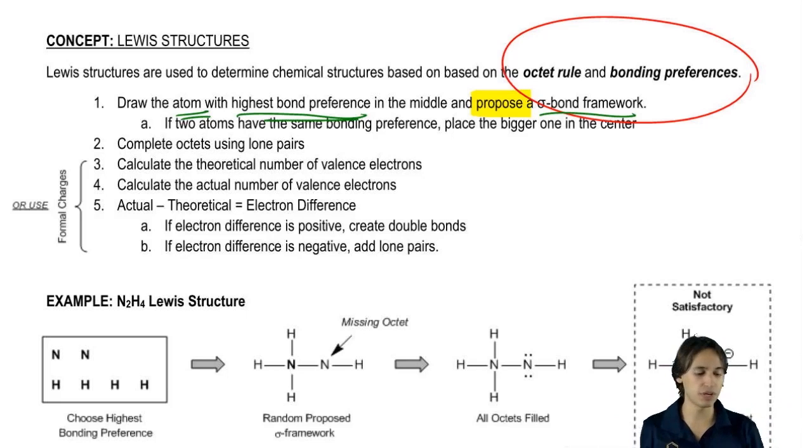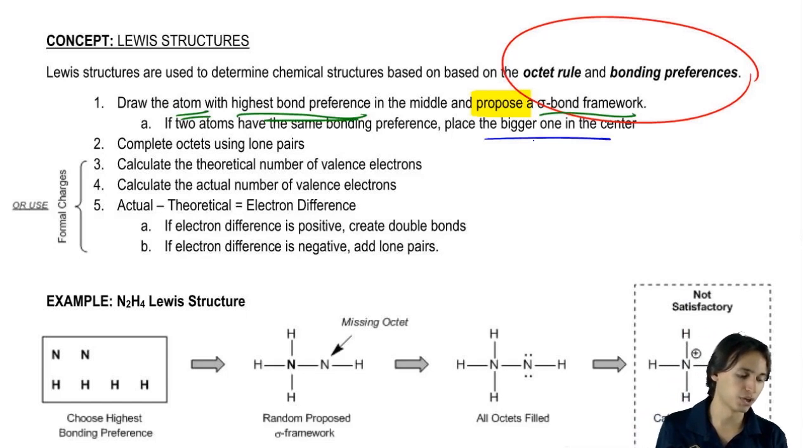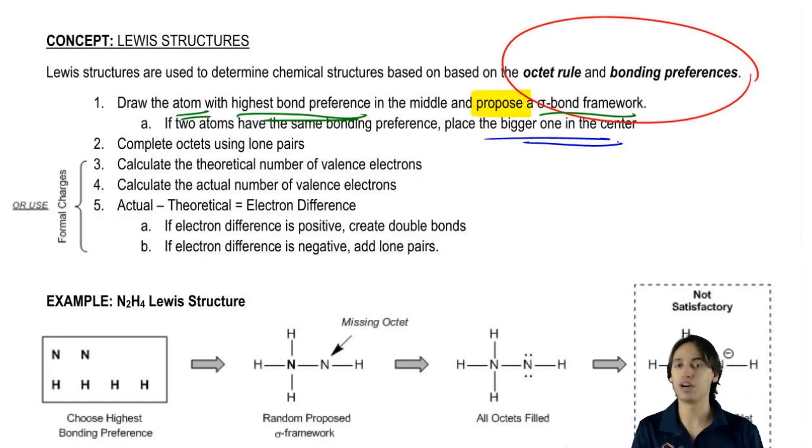Now just one more point. If it turns out two atoms have the same bonding preference, so for example, sulfur and oxygen. They're both in the same group, so sulfur and oxygen like to both have two bonds. Well, then you would just place the bigger one in the center, so that means sulfur would be in the center.